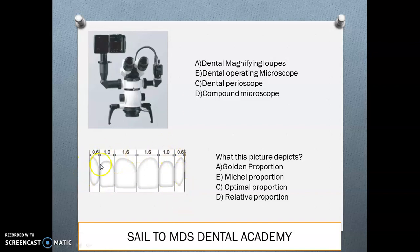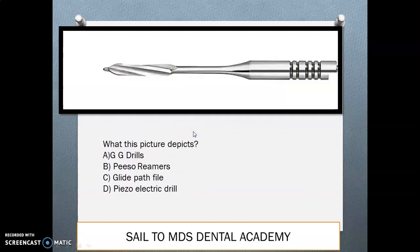This picture depicts the golden proportion — an aesthetic principle. You should know the golden proportion for all anterior teeth: for the central incisor it is 1.6, for the lateral incisor it is 1.0, and for the canine it is 0.6.